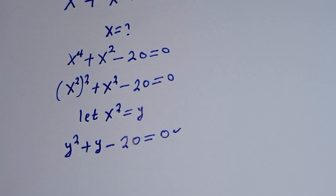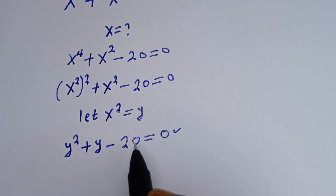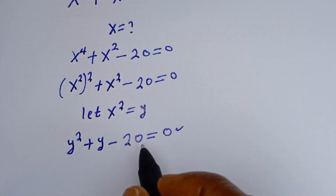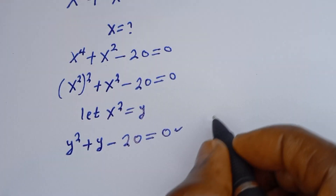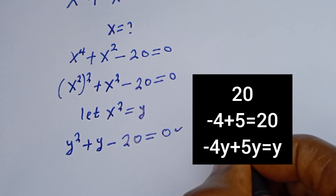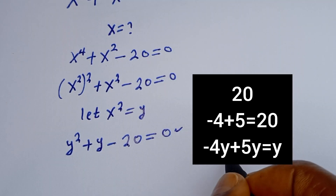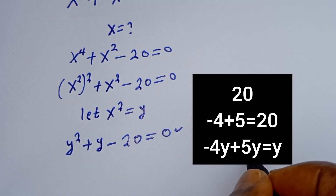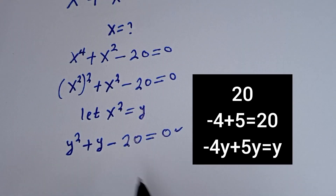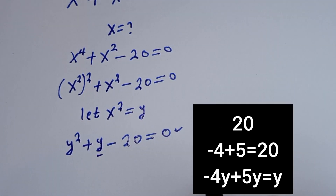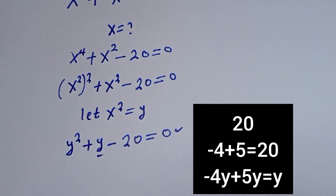This is a quadratic equation which can be solved using either the factorization method or the quadratic formula. Let's make use of the factorization method. 20 can be written as minus 4 multiplied by 5, which equals 20, and minus 4 plus 5 equals y's coefficient of 1.